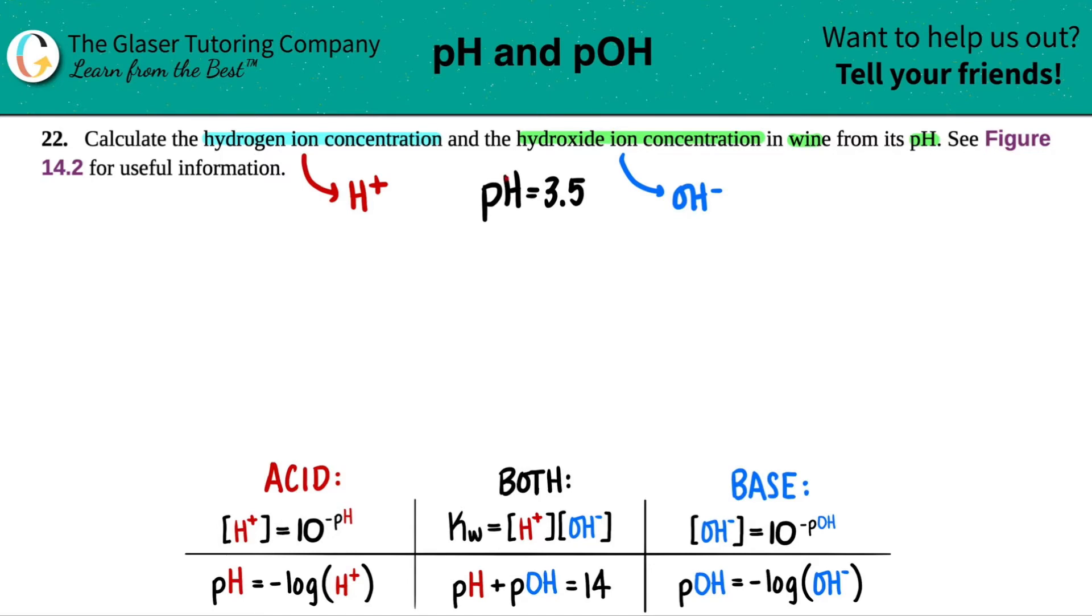Now just know that pH, literally H goes with H. It's on the acidic portion. So since we only have just one piece of information and it's acidic, I'm going to run through the equations that are just acidic for now.